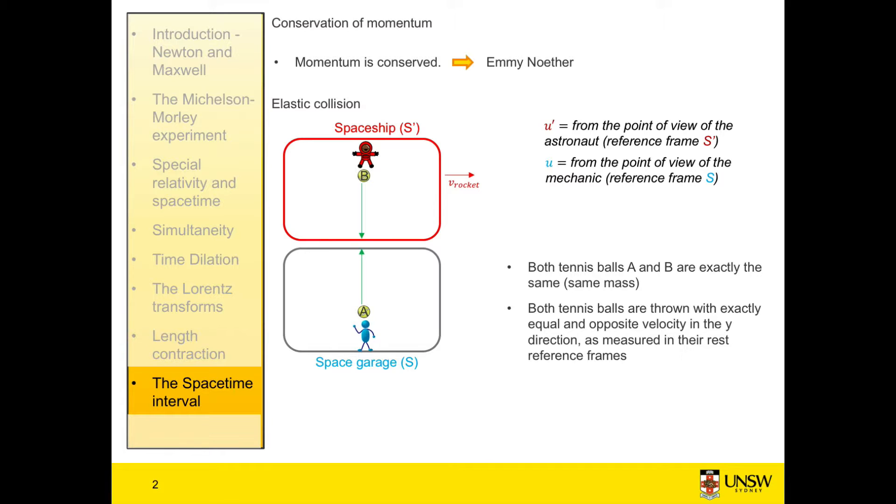The initial velocity of ball A, according to the space mechanic, is u_y_0, and the initial velocity of ball B, according to the astronaut, is negative u_y_0.